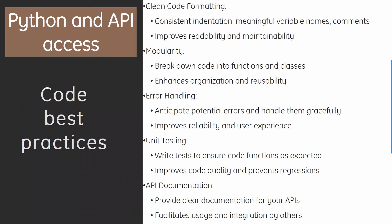Moving on, we have code best practices. Clean code formatting includes consistent indentation, meaningful variable names, and comments to improve readability and maintainability. Modularity means breaking code into functions and classes for organization and reusability. Error handling involves anticipating potential errors and handling them gracefully for better reliability. Unit testing ensures code functions as expected and prevents regression. API documentation provides clear docs to facilitate usage and integration by others.